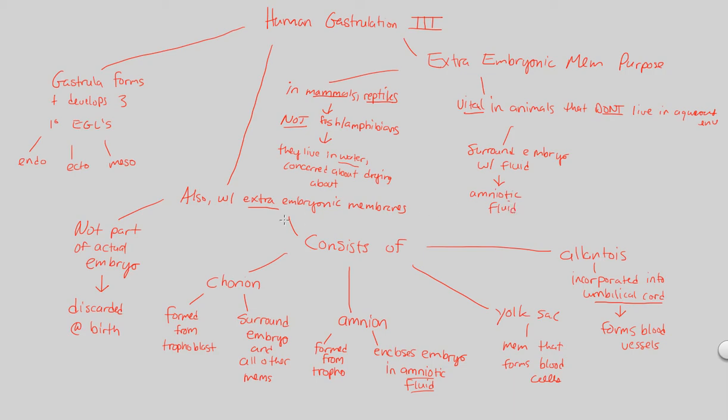So we utilize amniotic fluid by developing an extraembryonic layer called the amnion, which encloses the embryo in amniotic fluid. This results in the evolution of amniotes, a big group of very advanced, specialized land-dwelling organisms.